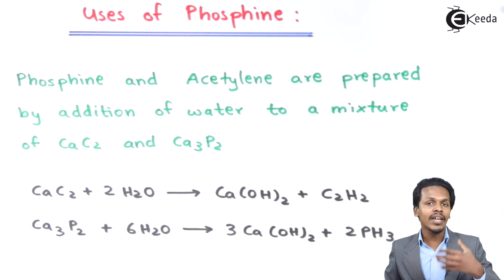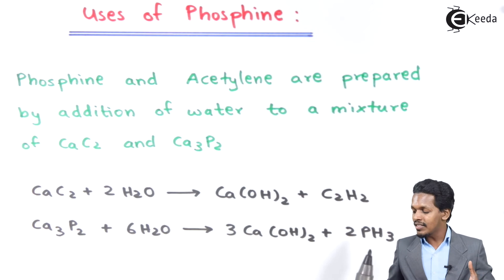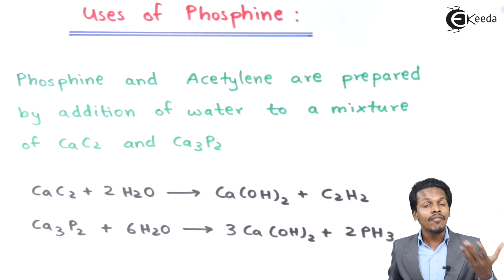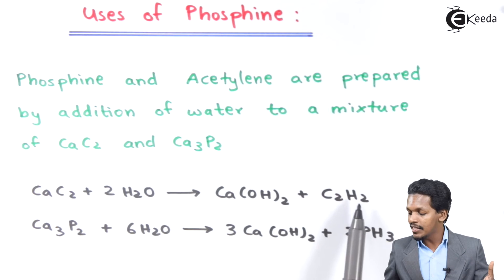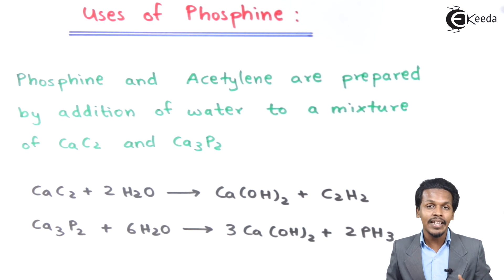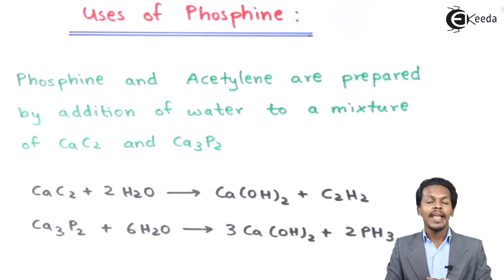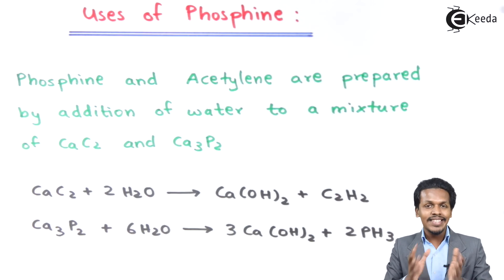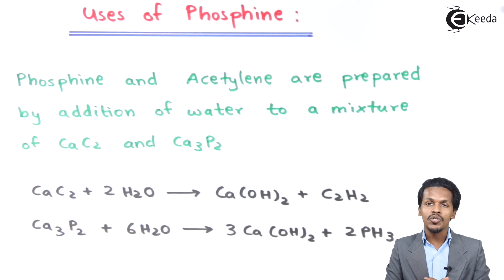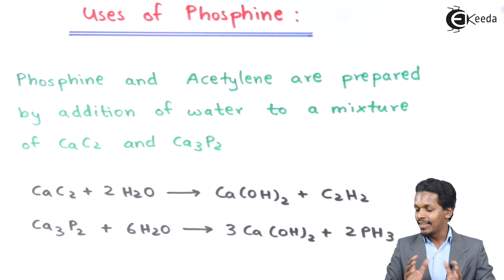As discussed in the previous topic, phosphine is very explosive in nature and whenever it comes in contact with air it explodes. So PH₃ is inflammable and it lights up the acetylene (C₂H₂), because of which we see a red flame. Because of this flame we can easily detect the presence of a rock. This is how it acts like a signal used by ship travelers.